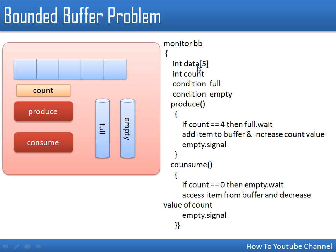We take an array for our buffer and a variable 'count' which tells us how many items are in the buffer. We are not providing the complete implementation here, just an idea of how it works. In the produce operation, it checks if count is equal to 5, meaning the buffer is already full. In that case the process will be put inside the queue by calling full.wait, so that process will be waiting inside the queue 'full'.